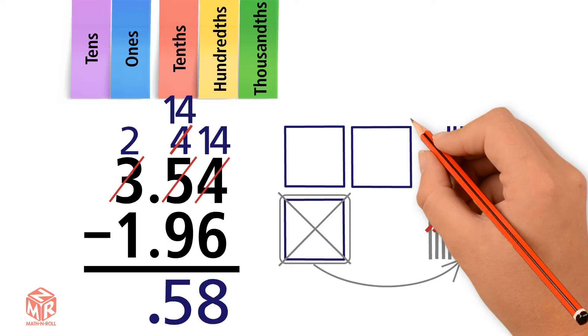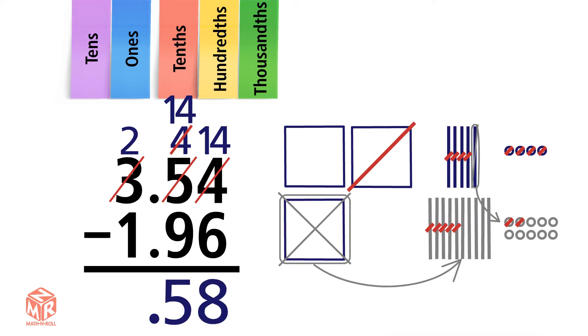Now subtract the ones. 2 minus 1 equals 1. So the answer is 1.58.